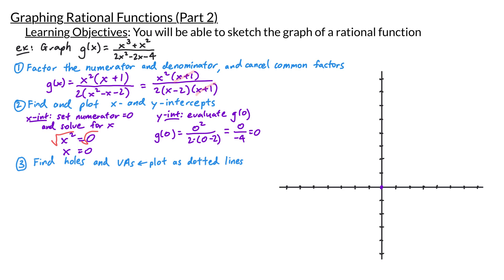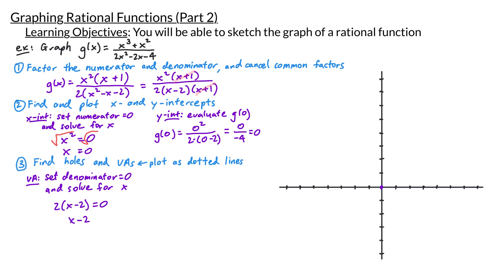Our next step is to find holes and vertical asymptotes. To find the vertical asymptote, we factor and cancel common factors, then set the denominator equal to 0. We've already done the factoring, so we set 2 times x minus 2 equal to 0. Dividing by 2 gives x minus 2 equals 0, and adding 2 to both sides gives x equals 2 — that's our vertical asymptote.